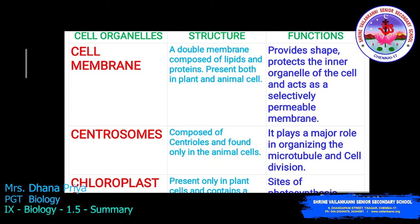Cell membrane: a double membrane composed of lipid and protein, present in both plant and animal cells. Its function is to provide shape and protect the inner organelles of the cell, and it acts as a selectively permeable membrane.